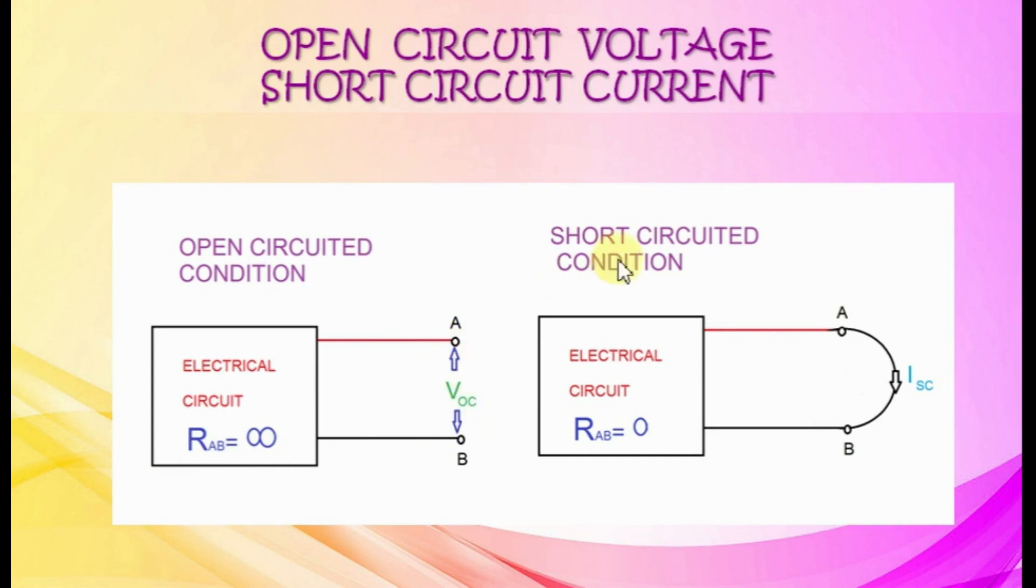In case of a short circuit condition, output terminals of an electrical circuit is closed. Resistance at the terminals will be zero. We can call current through short circuit terminals as ISC.